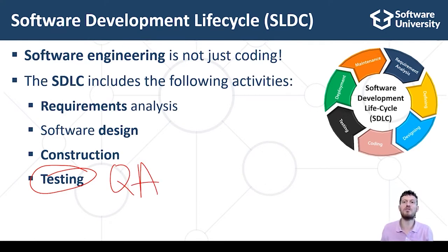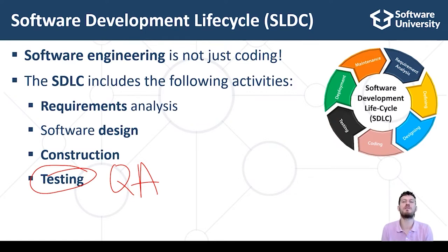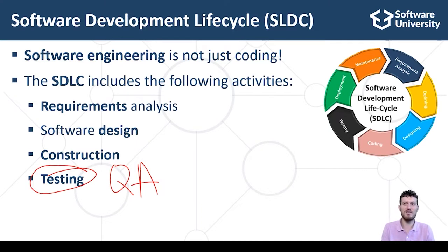Software testing and quality assurance confirms that the developed software conforms to the requirements. Software testing and verification is performed by quality assurance engineers — QA engineers. QA engineers test the code by performing manual and automated testing, report bugs in the bug tracking system, and track the work on fixing the bugs later.